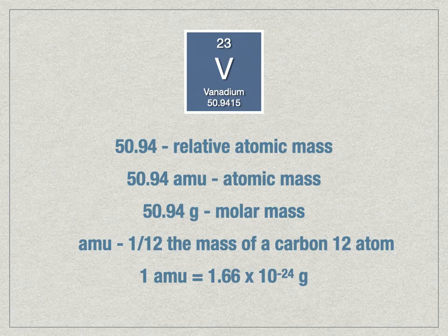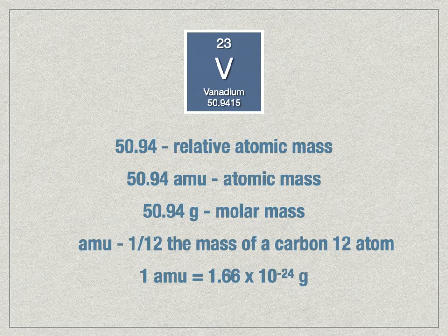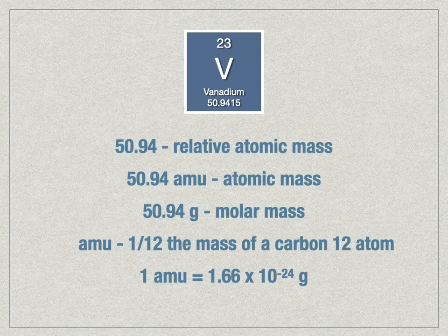An AMU is one twelfth the mass of a carbon-12 atom, which allows us to set relative mass at the average mass between a proton and a neutron — the things that primarily carry mass inside an atom. Electrons are pretty tiny. One AMU converted to grams is 1.66 × 10⁻²⁴ grams, so 1 AMU is a pretty tiny amount of mass. If you're talking about weighing atoms, you would need a very small unit.